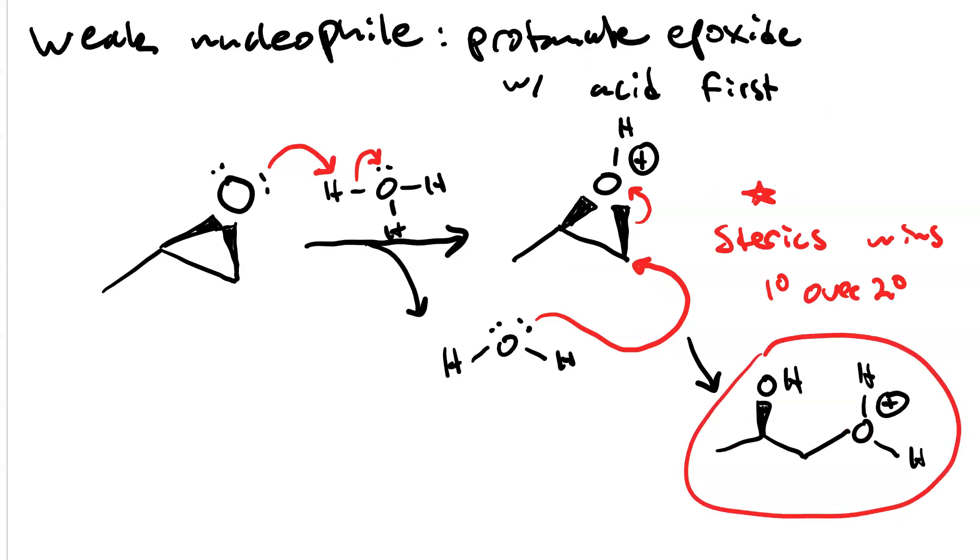So we form this product, which is a protonated alcohol, and we need to deprotonate it to get our vicinal diol. It just so happens that another water molecule will be handy in acidic solution to act as a base, so we do proton transfer and here is our product.